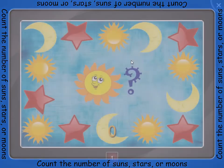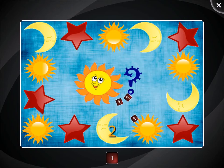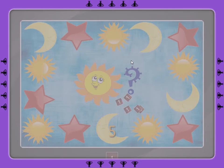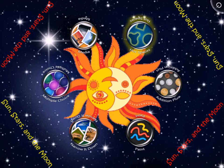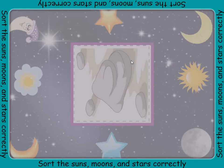Sort the suns, moons, and stars correctly according to the box in the middle. Inside the box is a way to describe some of the pictures scattered around. Decide which ones match this description and drag them into the box.